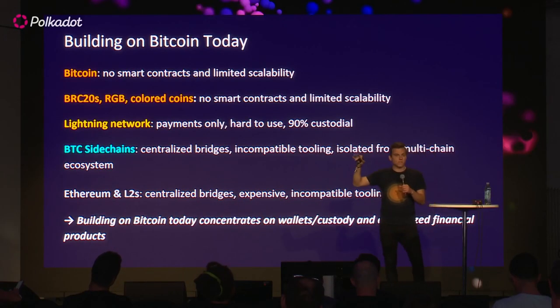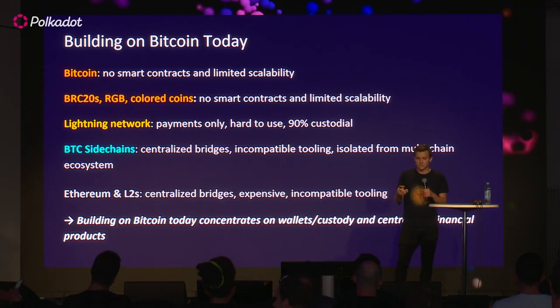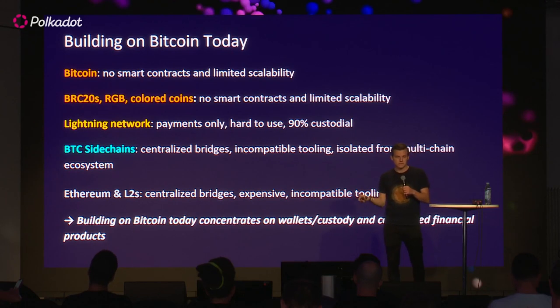On the other side, in the rest of the ecosystem — on Ethereum, L2s, Avalanche — you do have Bitcoin but it's all centralized. You have centralized bridges, incompatible tooling, and it's expensive. Ethereum is not cheap, and if you go to an L2, you trade it off for centralization. As a result, building on Bitcoin today concentrates on wallets, custodying Bitcoin, hodling, and centralized financial products.